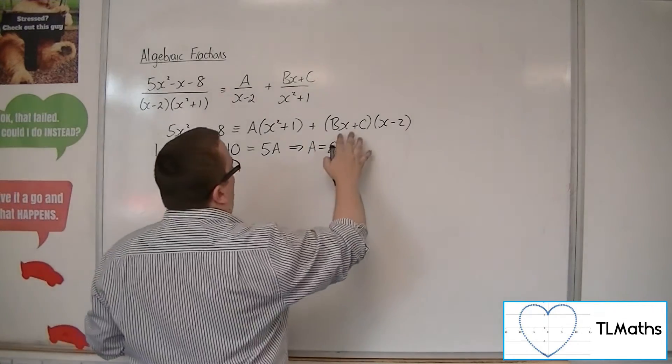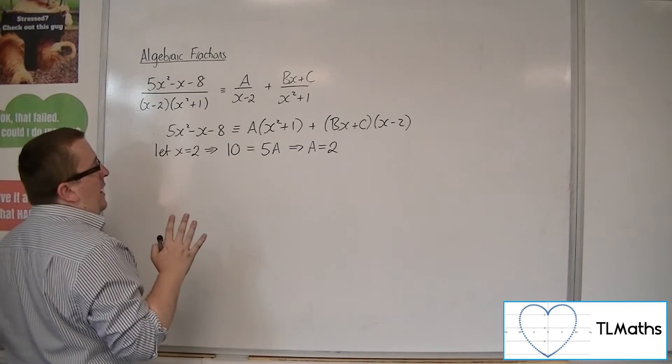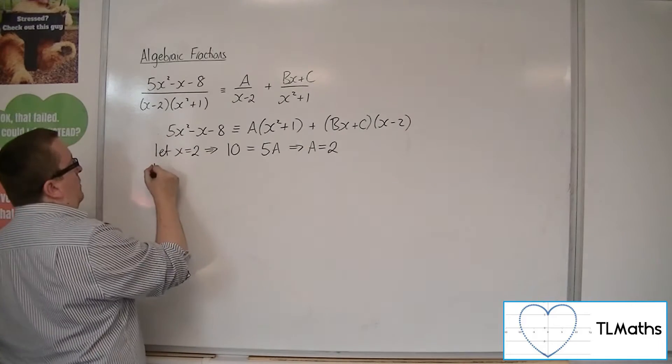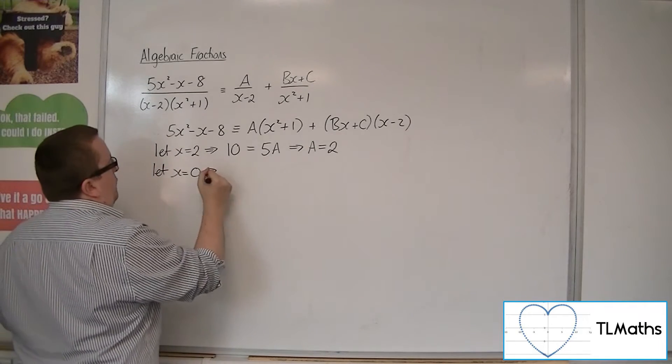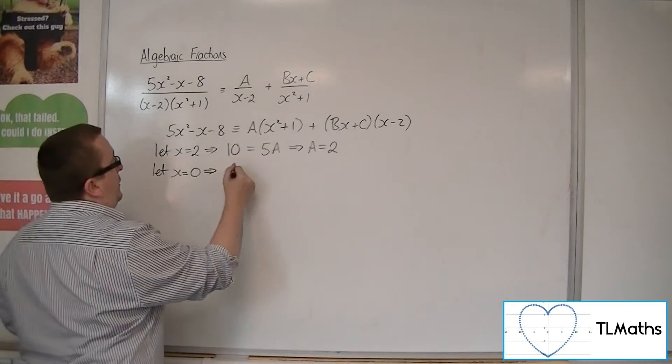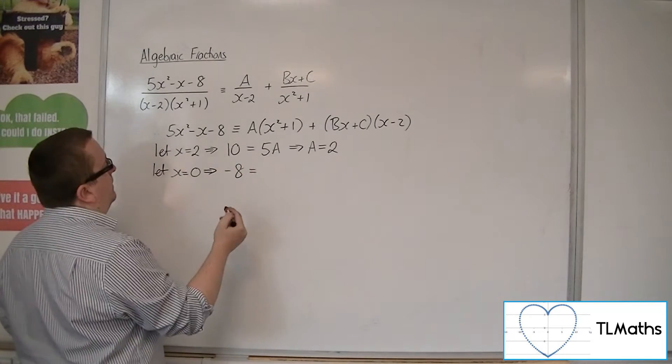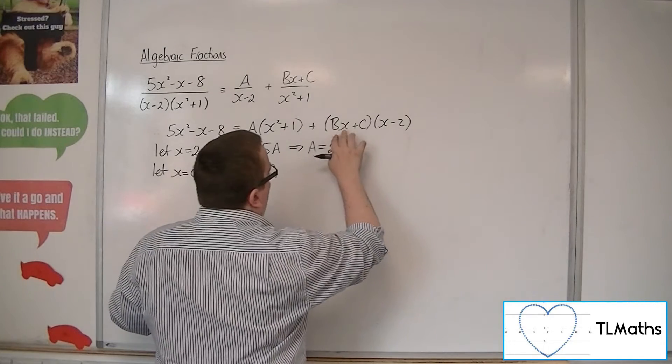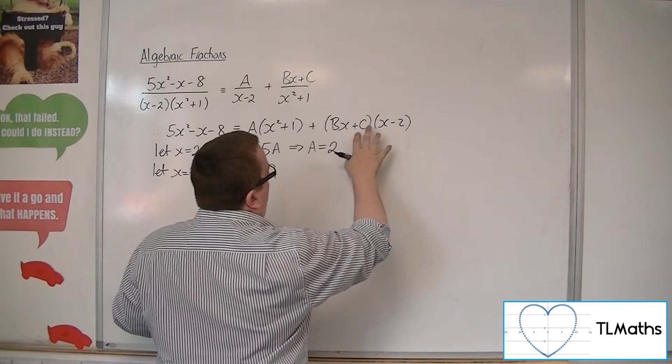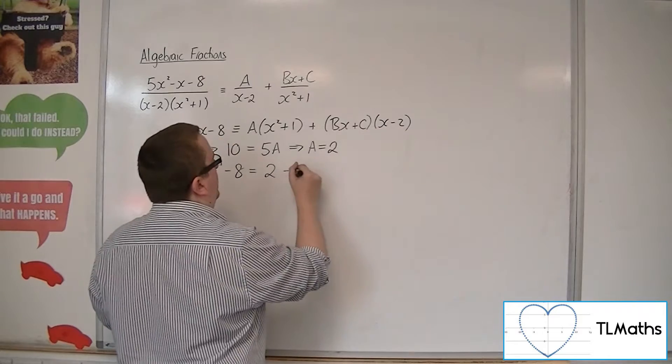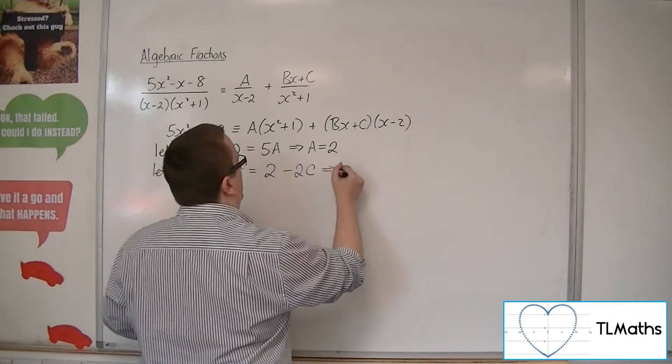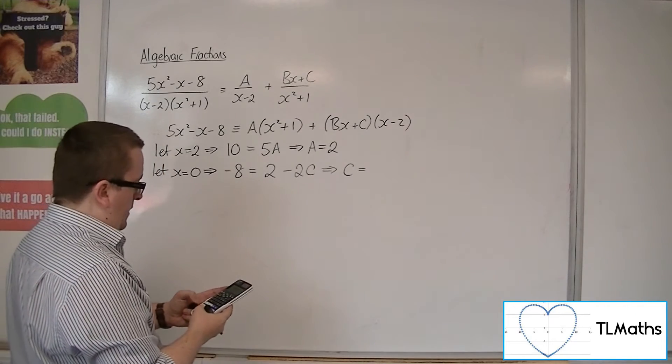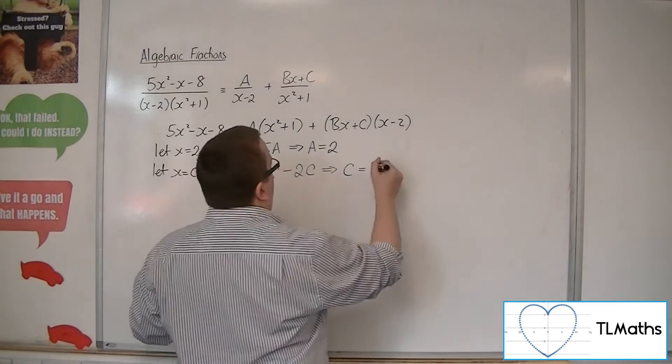Now, what can I do? Well, what I can use here to knock out this x is to use x is 0. So if we let x be 0, then we're going to get minus 8 in the numerator. We're going to get 1 lot of A, so 2. The 0 will knock out the B, so I'm going to have C times minus 2, so minus 2C. So that means I can take 2 from the minus 8, then divide by minus 2, so C is 5.